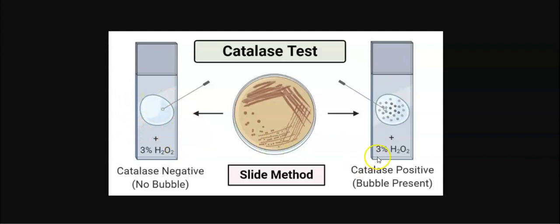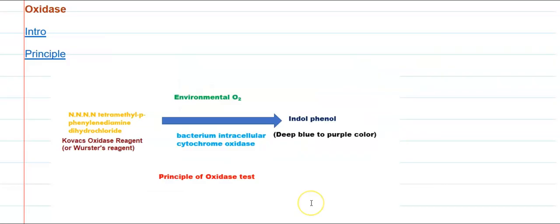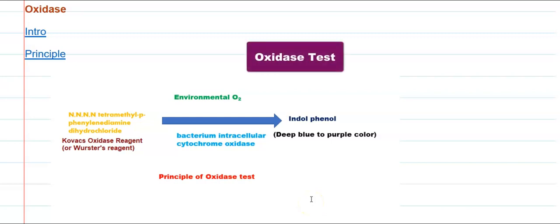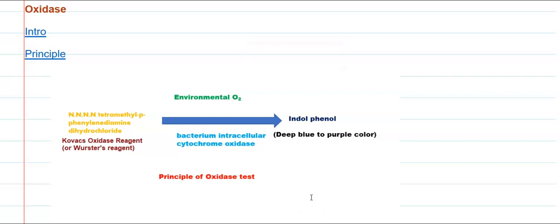You have to first take a drop of hydrogen peroxide, then collect the culture using the applicator stick, toothpick, or an inoculation needle containing platinum wire, and spread it on the slide. If the culture is positive in nature, it will produce a lot of bubbles. This is the simple method of catalase testing performed in the laboratory. The next test is the oxidase test, which includes an introduction, the principle behind oxidase testing, and the applications of both the catalase and oxidase tests.